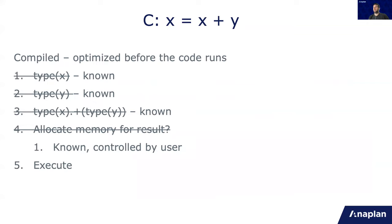Next, why C is fast? C is compiled. So the code is optimized. And the type of x is known and y is known and how y operates on x. And also it knows if it needs to allocate memory for the result or not. And it is controlled by the user. So if you have a large array, usually you don't want to allocate memory because it takes time. So the only thing which is needed to do is execute.